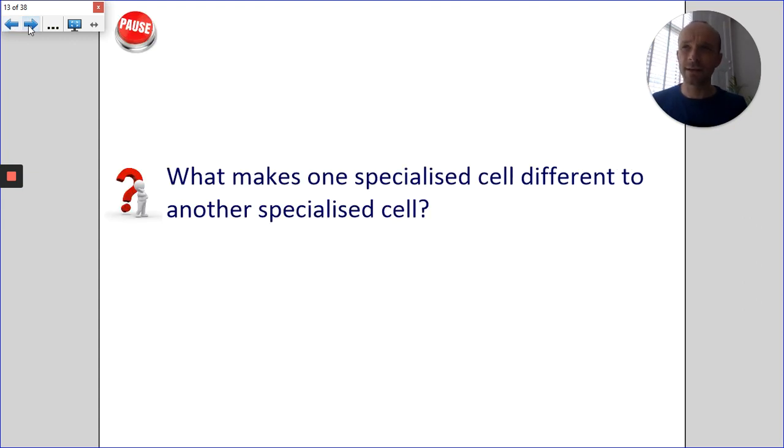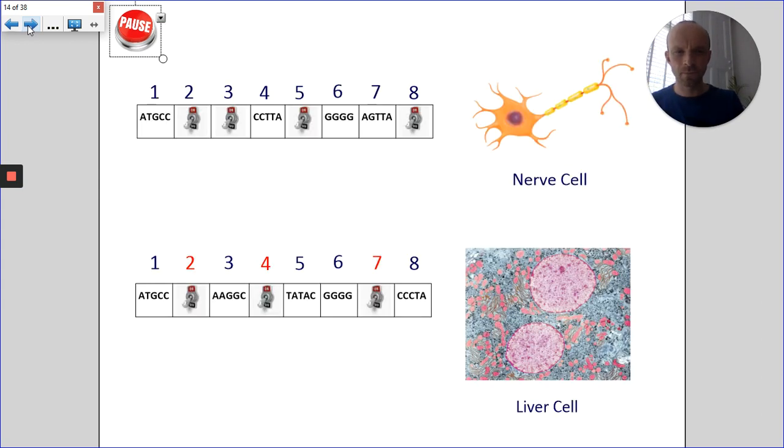So we said that there are about 200 different types of specialized cell in the body. So what makes one specialized cell different to another specialized cell? Well, just take a look at the pictures and see if you can work it out for yourself. Notice at the top, we've got a nerve cell, a specialized cell,